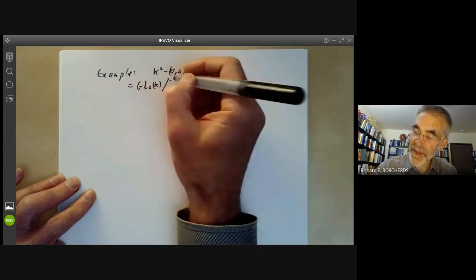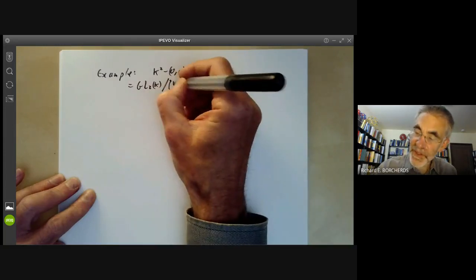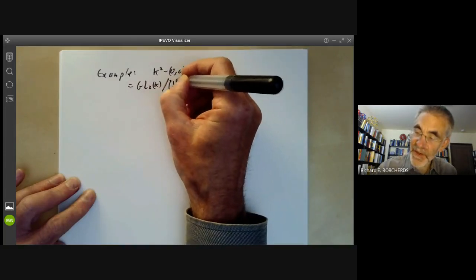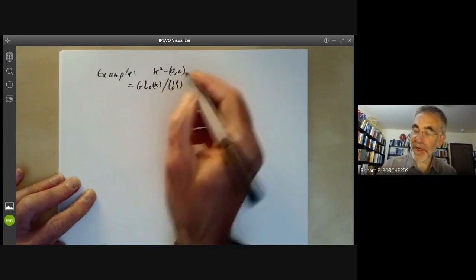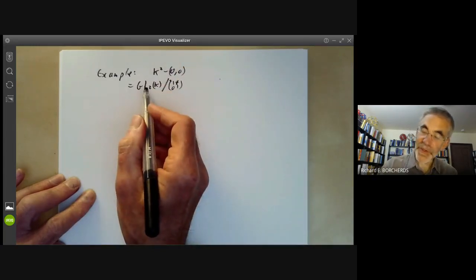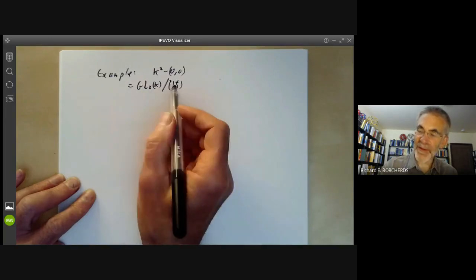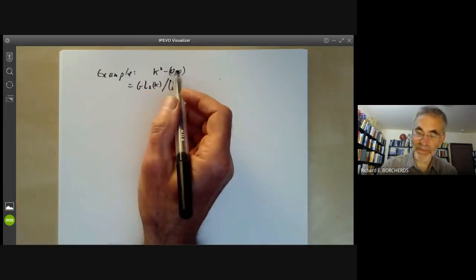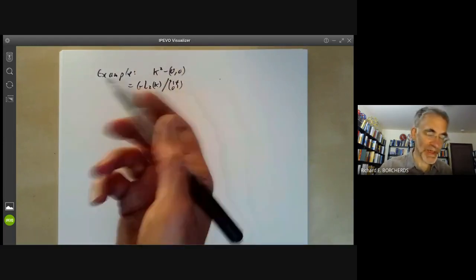And the subgroup fixing a point is just a group of all matrices like this, which is just an affine line. So here we have another quotient of an affine group by an affine group. And it's a bit of a mess. It's neither affine nor projective.